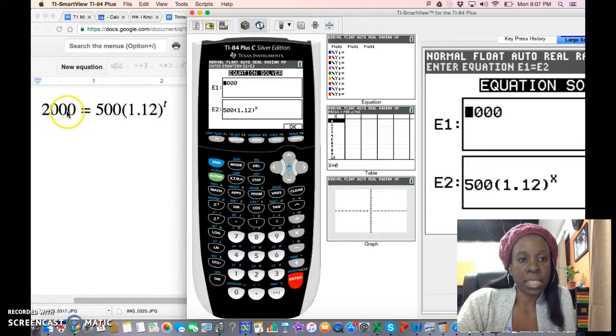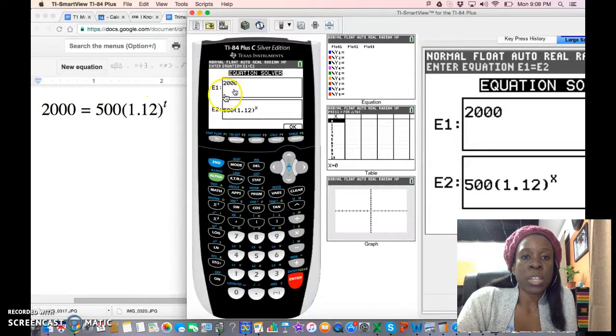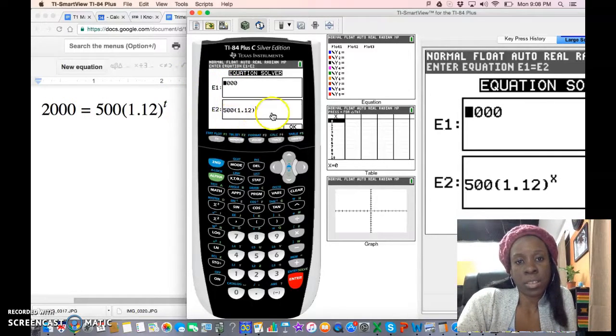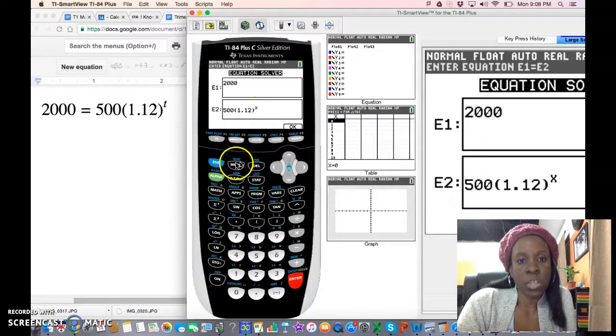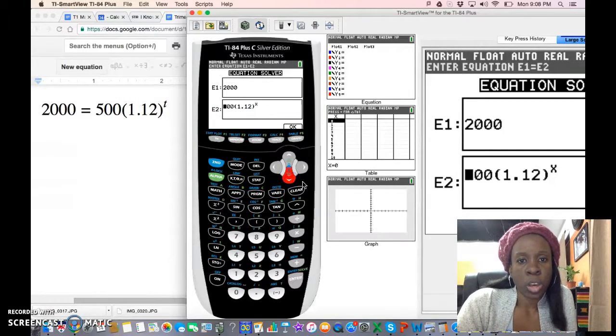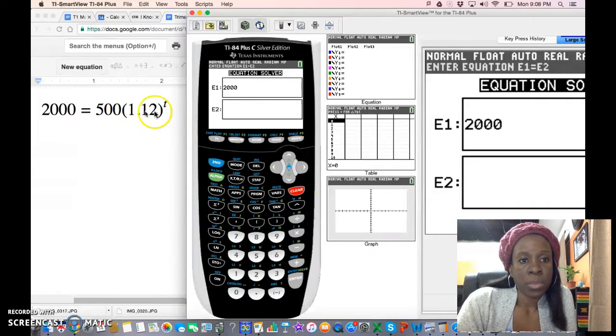I've actually already entered it into the calculator. On the left side you put the first expression from the left side of the equation; the second expression is from the right side. So I just type that directly in. I'll actually show you how I type that in just in case you need to see that.